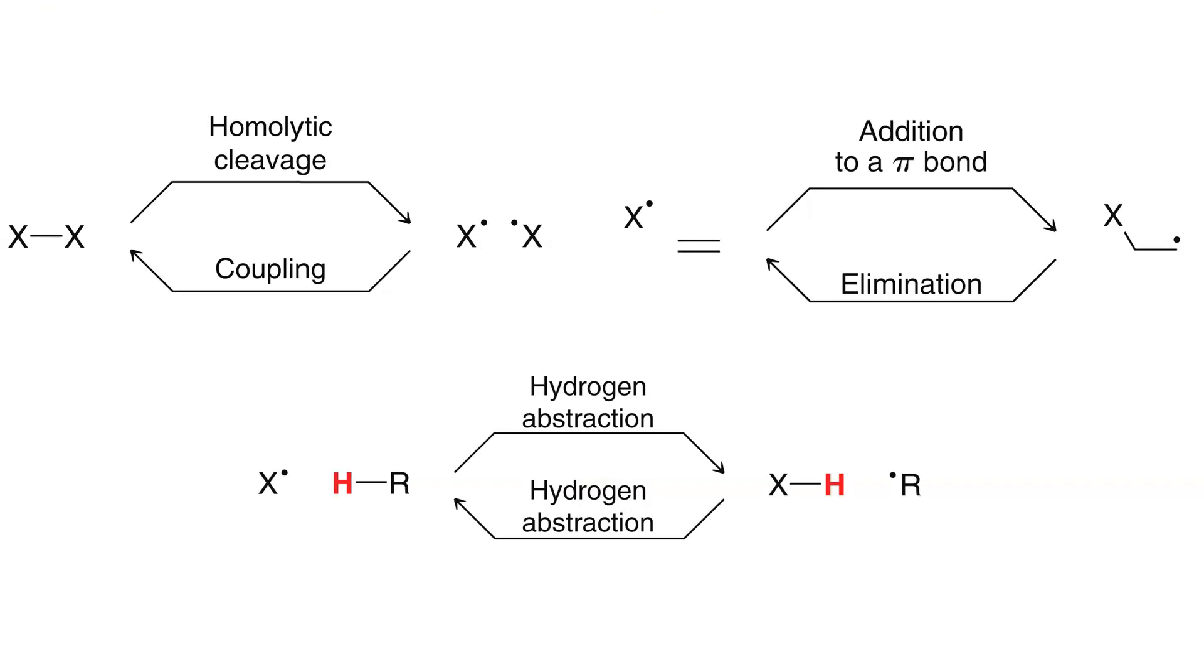So, I've shown how homolytic cleavage and coupling are the reverse of each other, and how elimination is the reverse of addition to a pi bond. It turns out hydrogen abstraction is the reverse of hydrogen abstraction. Take a look at this. Those are the three curved arrows of hydrogen abstraction, leading to an X-H bond and a new radical.